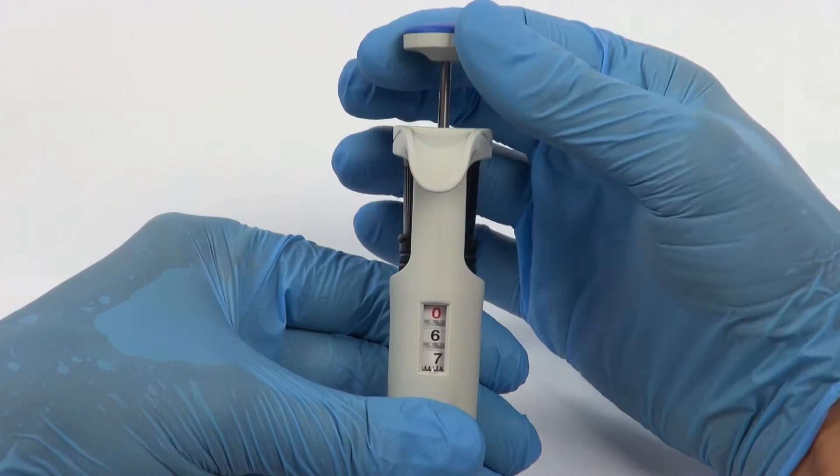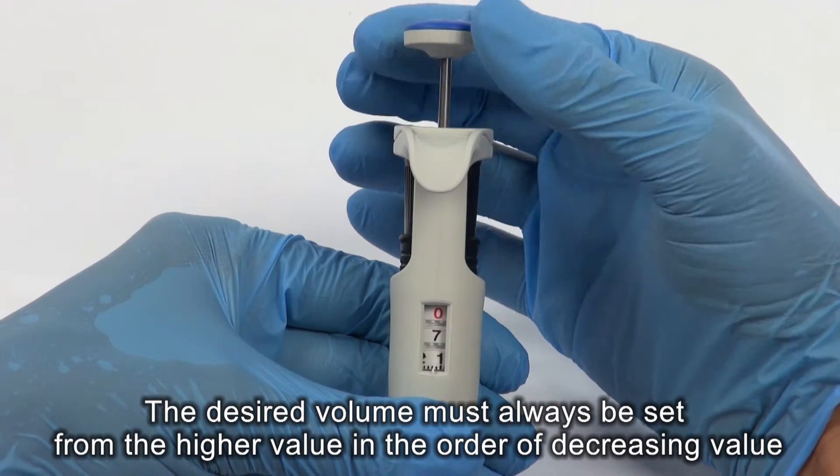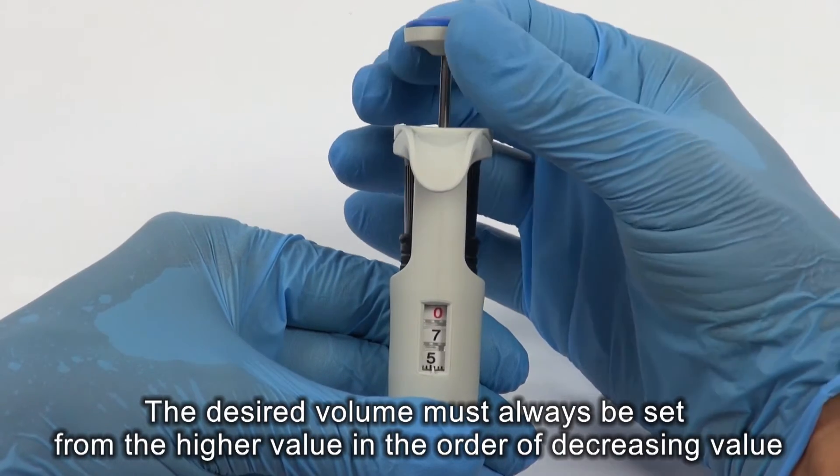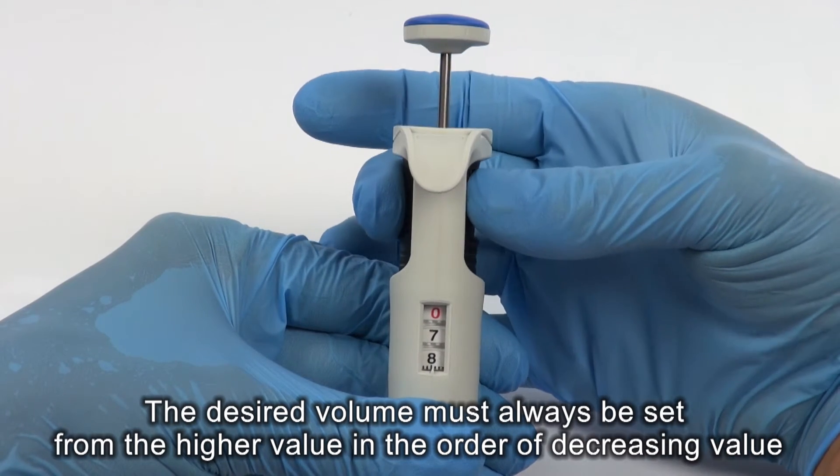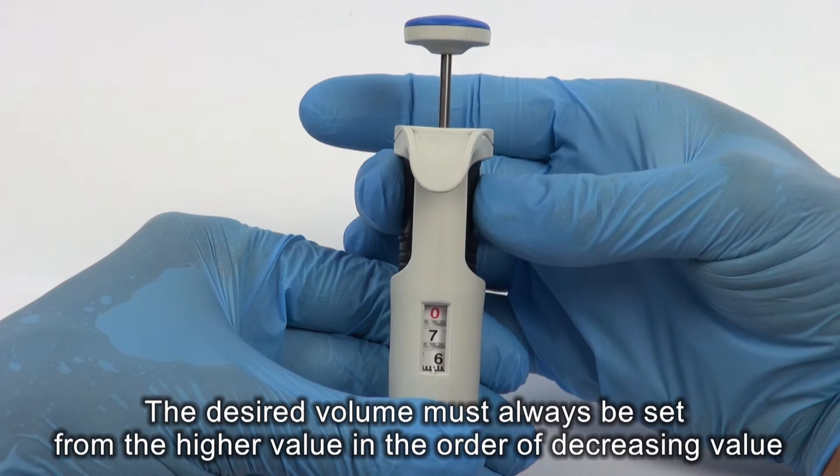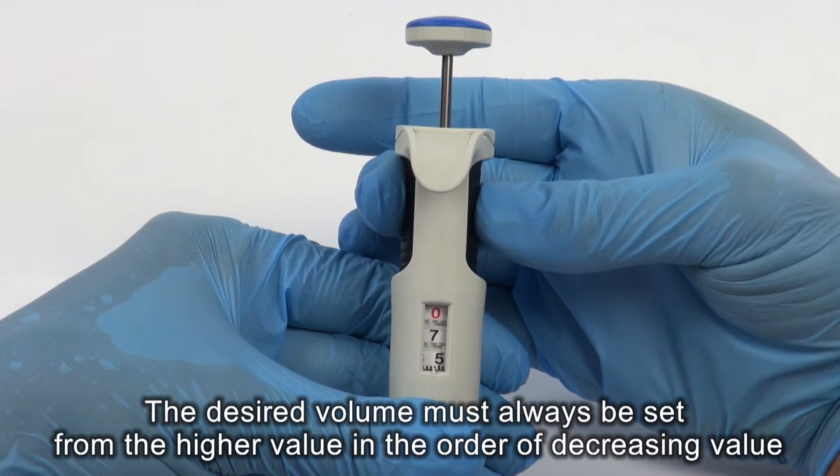If the desired volume is higher than the set volume, turn the pipetting push button, increasing the value until the lower figure wheel comes one third of a turn beyond the required setting, and then turn slowly backward.